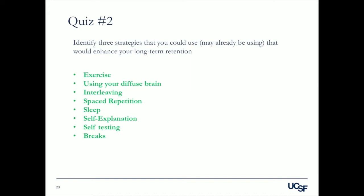Interleaving — break it up and don't study just one thing the entire evening or afternoon. Spaced repetition — whenever possible, come back and touch on that information again, even if it's just asking yourself what you remember. Sleep allows your diffuse brain to make connections from the material you've worked on during the day. Self-explanation — ask yourself why something is true, and whether you can explain it to someone else, even over dinner with roommates or a partner.